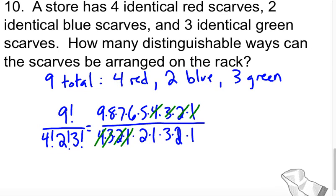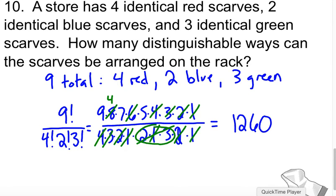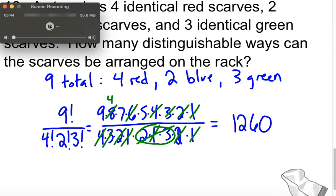Let's see. Two times three is six, so I can cancel those. And then, two and eight are both divisible by two. So I only need to plug in my calculator nine times four times seven, which turns out to be 1260 ways to arrange these scarves.